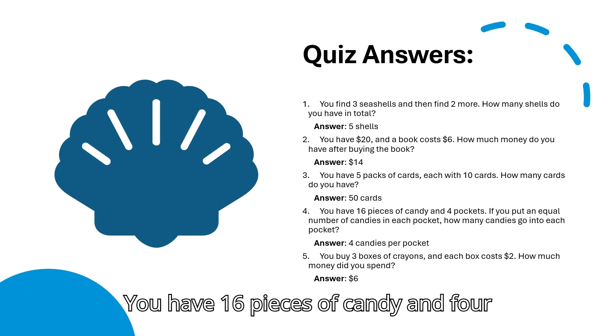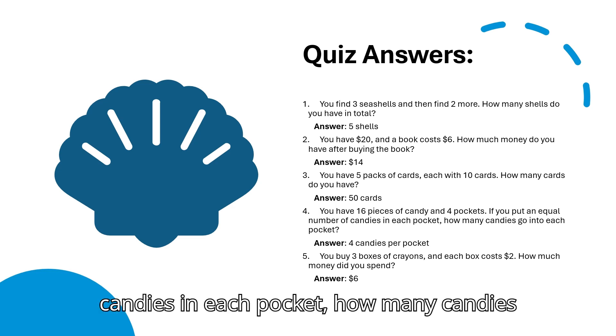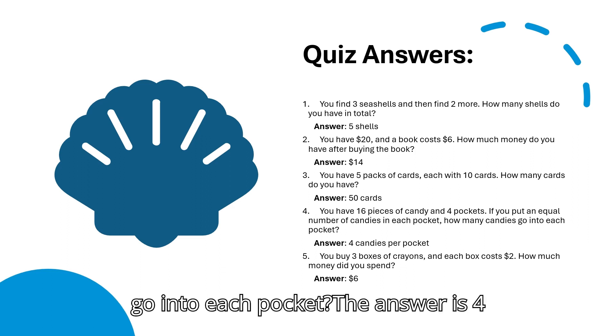Question 4: You have 16 pieces of candy and 4 pockets. If you put an equal number of candies in each pocket, how many candies go into each pocket? The answer is 4 candies per pocket. To explain, you are dividing 16 pieces of candy into 4 pockets. When you divide 16 by 4, you get 4 candies in each pocket.